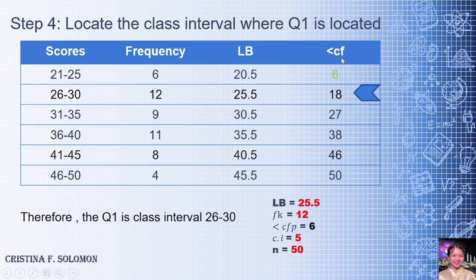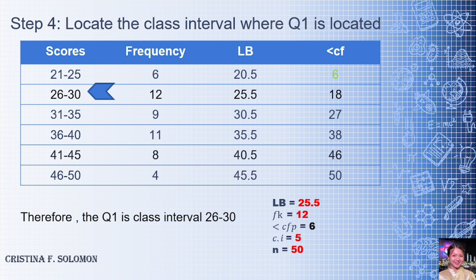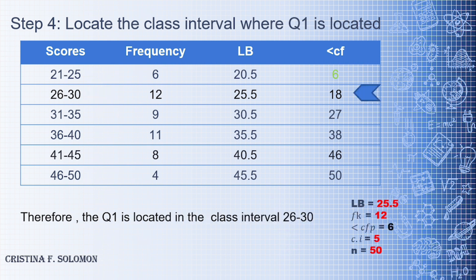In the less than cumulative frequency column, 12.5 falls on 18, since 6 is less than 12.5 and 18 is the next value closer to it than 27. Therefore, Q1 is located in the class interval 26 to 30. We then get all the data from that row: frequency = 12, lower boundary = 25.5, and the less than cumulative frequency of the preceding class = 6.